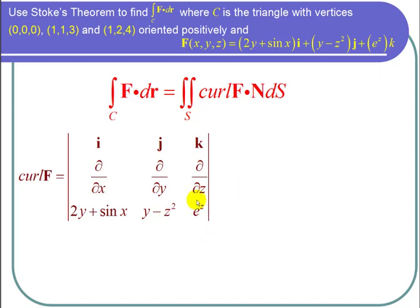So I take that determinant. For the i component, I get del over del y of e to the z, which is 0, minus del over del z of y minus z squared. So we get 0 minus a negative 2z, which is positive 2z.